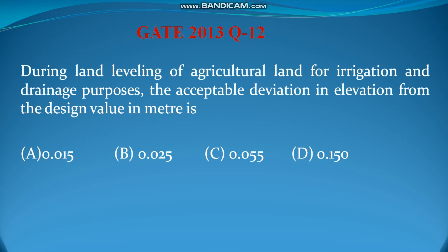This is very straightforward. You need to know that the deviation for all different types of leveling for land irrigation or drainage purposes is already taken as 15 millimeters or 0.015 meter. Therefore the answer will be 0.015 meter.